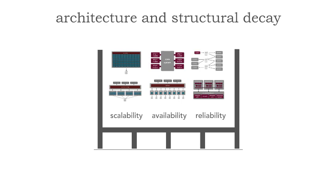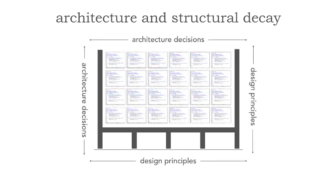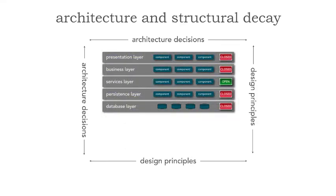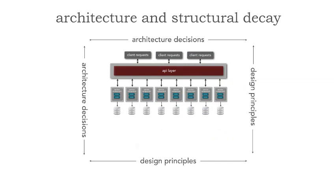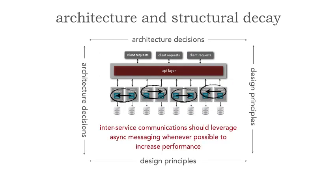Now that's the overall structure. But the other thing we're analyzing that forms architecture are architecture decisions and design principles. For example, in a closed layered architecture, I might specify as an architecture decision that only the business and services layer can access the persistence layer — I do this to support change control at the sacrifice of performance. Similarly, I might make a design principle within microservices architecture to say, please try to leverage asynchronous messaging whenever possible when communicating between services — inter-service communication — in order to try to increase performance. These are examples of architecture decisions and design principles that also form that architecture.